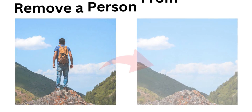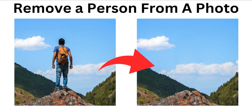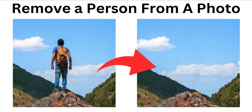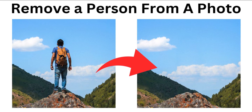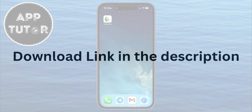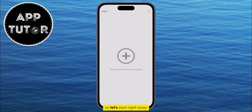Hi everyone! In this video, we're going to show you how you can remove a person from a photo using an app called Snapseed. We can download Snapseed for free for both iOS and Android, and I'll leave the download link for Snapseed in the video description down below. So let's start right away.